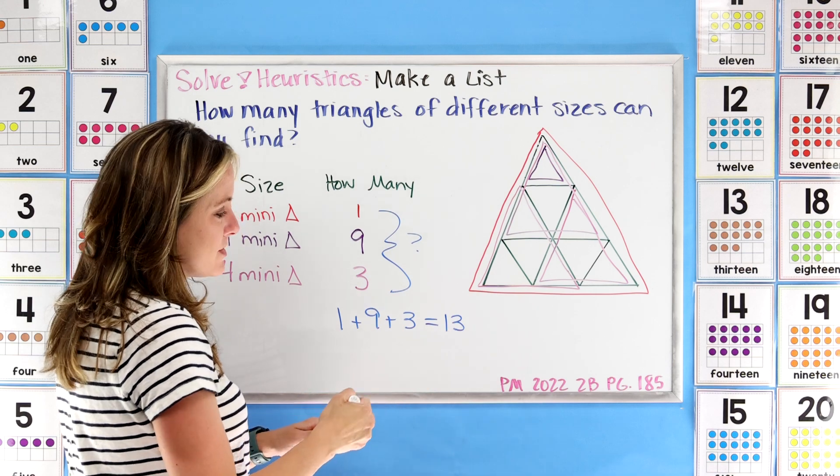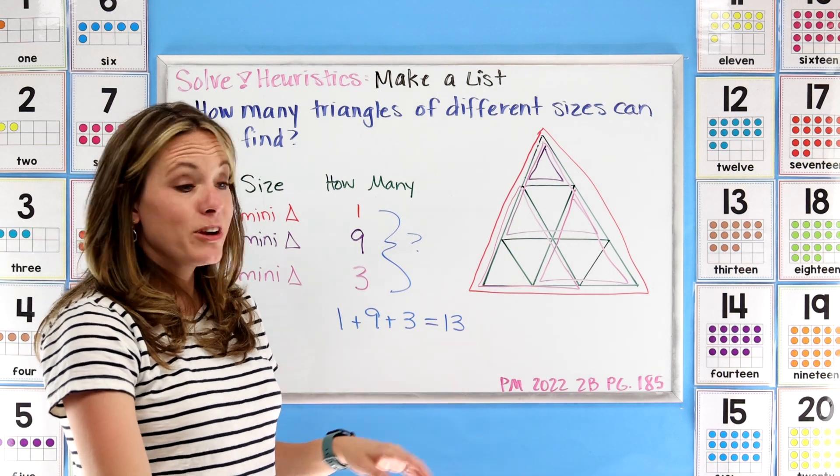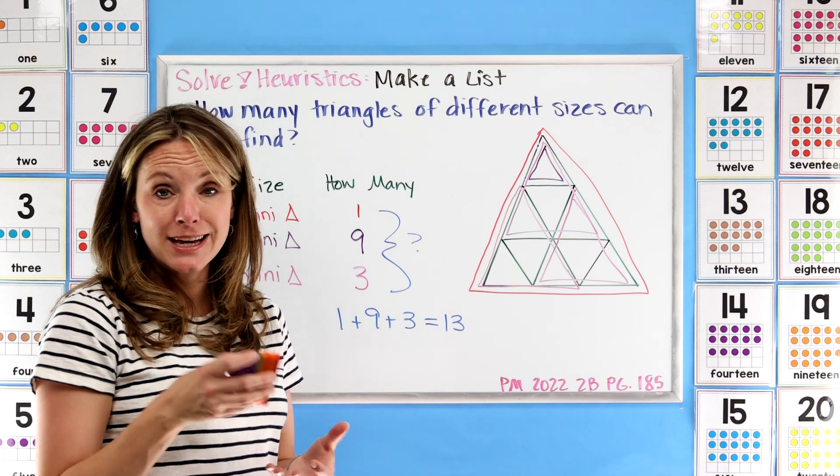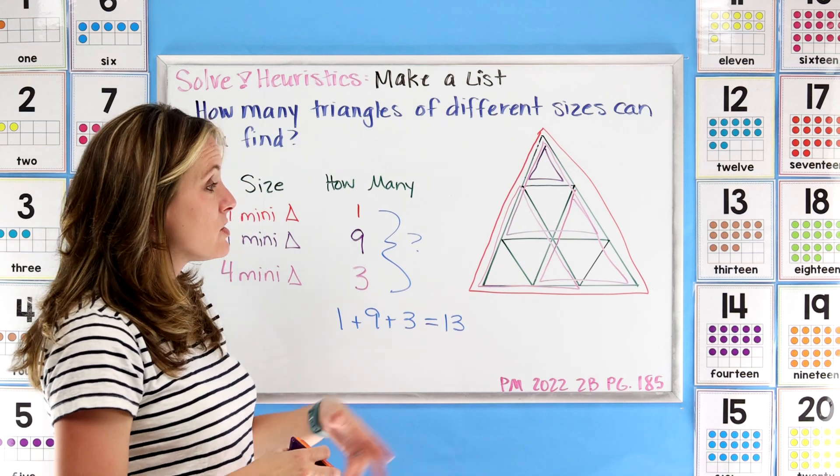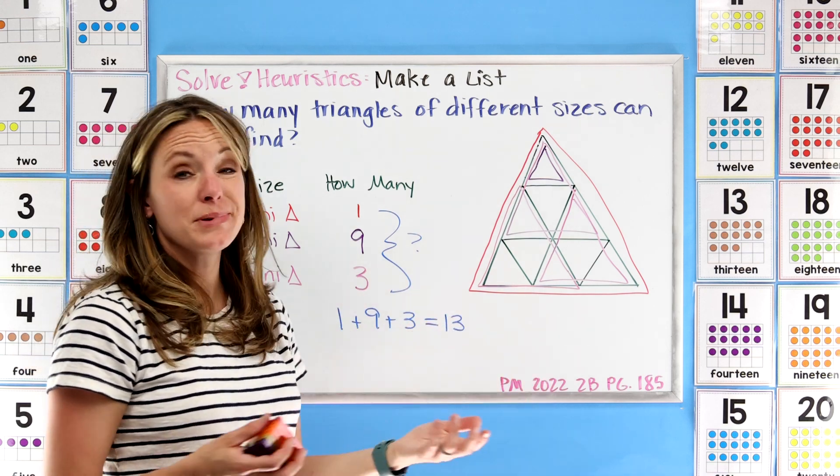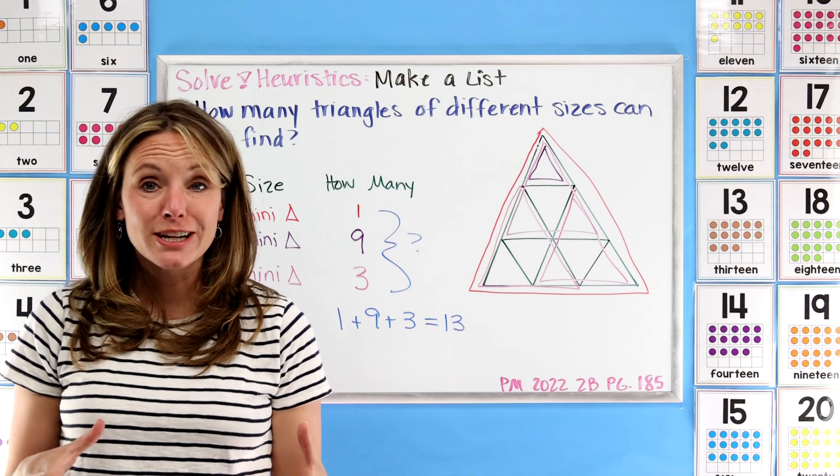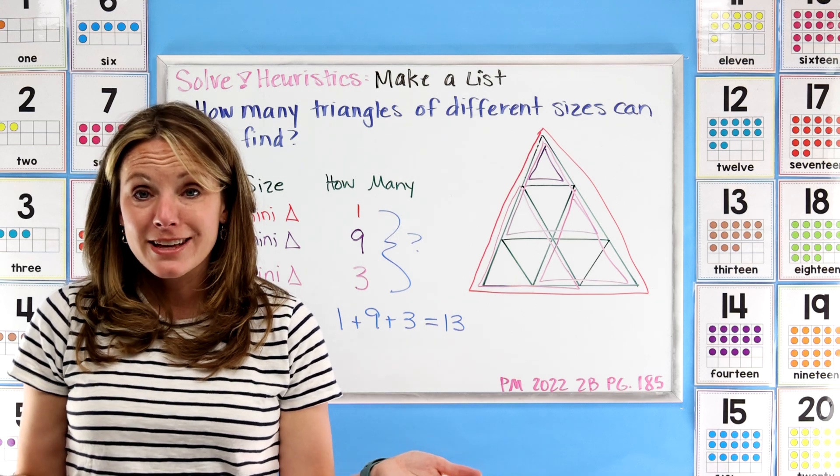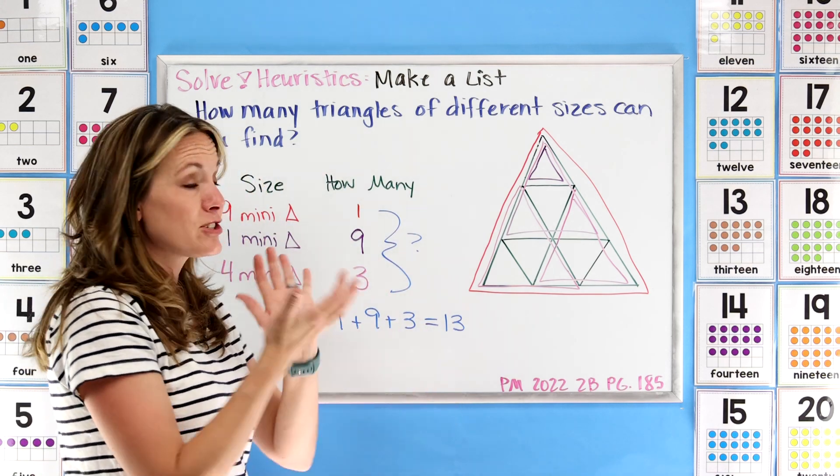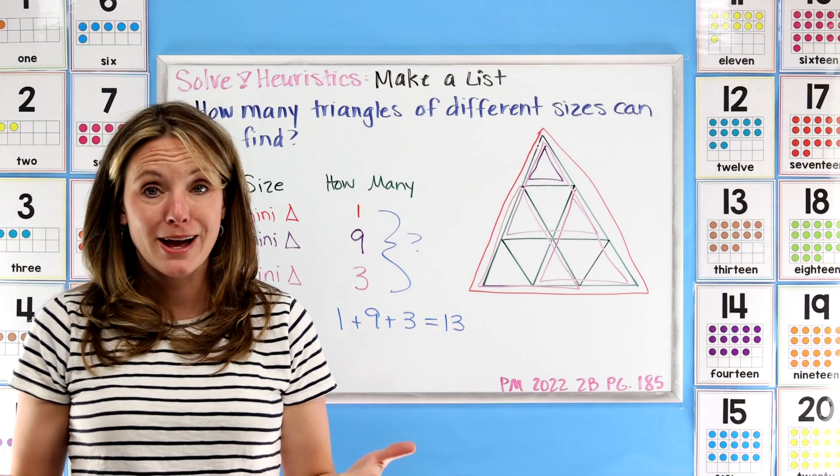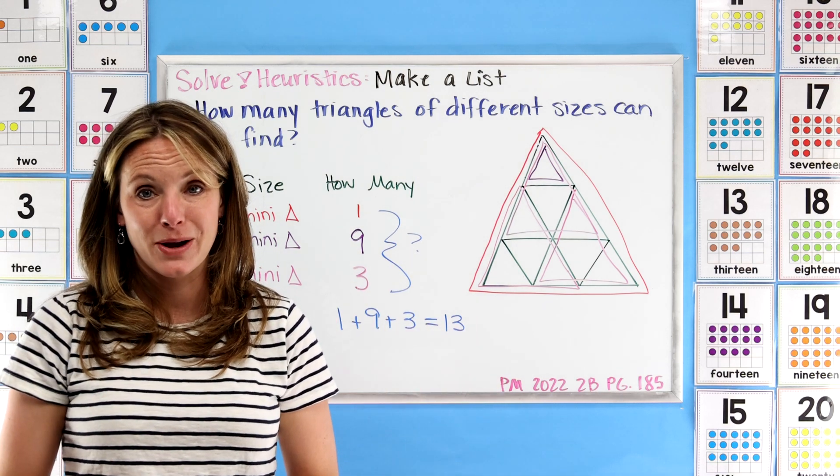So how many different triangles did we find? 13. Now we can go and check our answer by maybe replicating it or acting it out or even just trying again and maybe even building it. There's lots of different ways we can check it. But now we have this great strategy of making a list, which is super easy - just keeping your information organized. And as I said, your list may look different than mine, but you can apply this strategy in the next two practice problems.